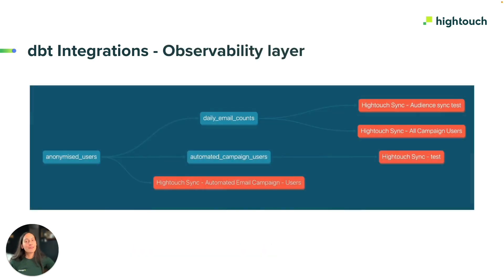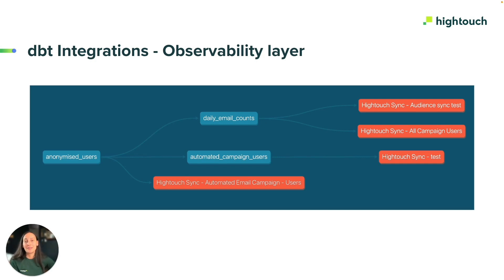We also offer a dbt observability layer that lets you see which Hitech syncs are using your dbt models by integrating with dbt exposures. This lineage graph enables your team to visualize where data is flowing from your raw data models all the way to destination tools.